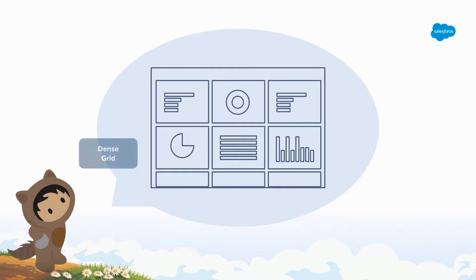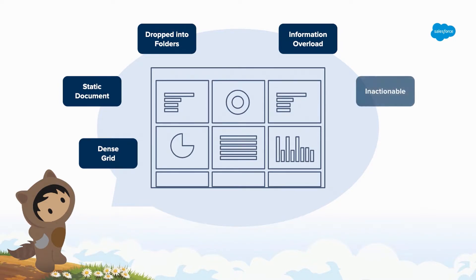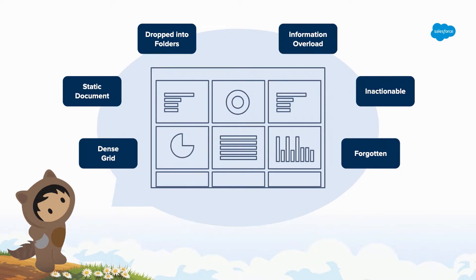What is that? Often it's a dense grid, a static document organized into folders — information overload. It's answering many questions at once with no real hierarchy to how the questions are being answered. Not terribly actionable. The data's there, the insights might be there, but how do I take action from that dashboard? And eventually these are forgotten because they follow a document model — documents have a life cycle, they're used, organized in folders, and you move on.